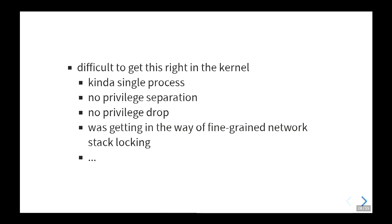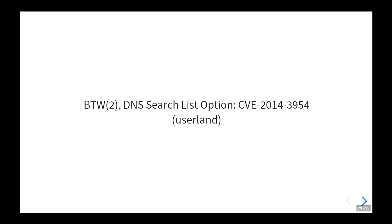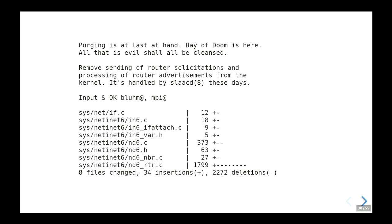Additionally, there are complex timer interactions with the lifetimes, which is easy to implement in user land but not so easy in the kernel where you don't have all the abstractions needed. In the kernel it's single-process — you have no privilege separation or privilege drop. It was also getting in SMP's way for fine-grained network locking. And I saw a comment about the DNS search list option — someone got that wrong in user land, and nobody is crazy enough to do that in the kernel. That's why moving to user land is good.